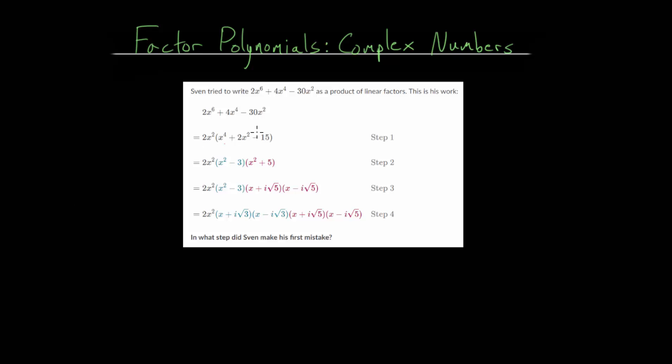In this video, I'd like to continue talking about factoring polynomials with complex numbers. We'll look at another example problem where we need to find the mistake. There are two general strategies: we can either work out the factorization on our own and compare it step by step, or at each step along the way we can re-multiply everything back out to see if we get the expression from the step before it. We will get more practice by working it out ourselves, so let's apply that strategy.